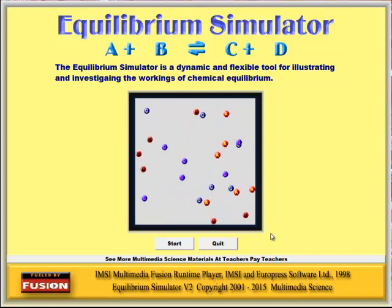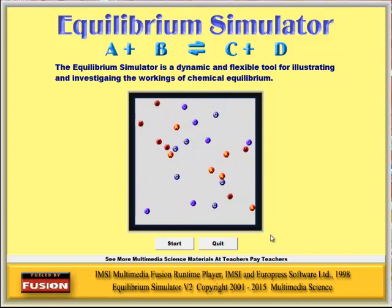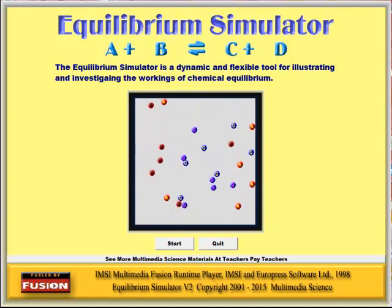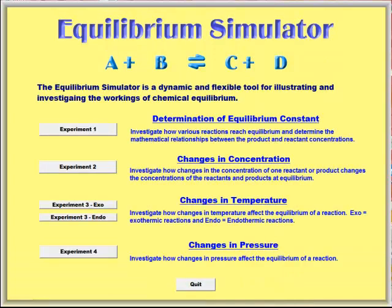Included are four experiments which utilize four variations of the simulation. The simulation allows different equations of the form A plus B equals C plus D, and different concentrations of reactants and products at the start of the reaction.